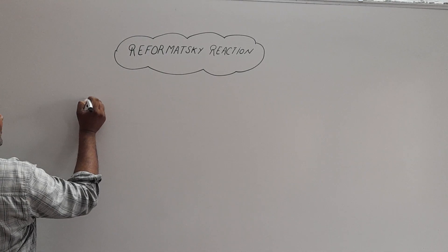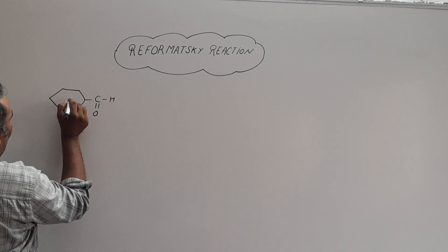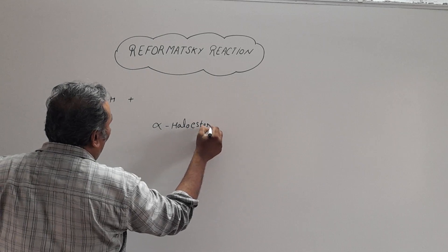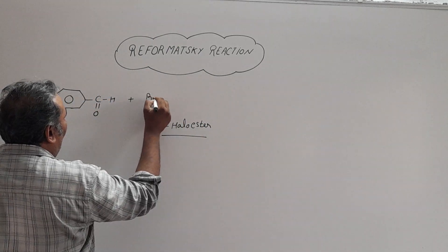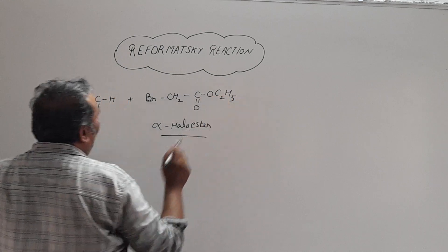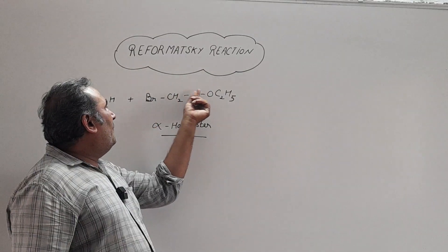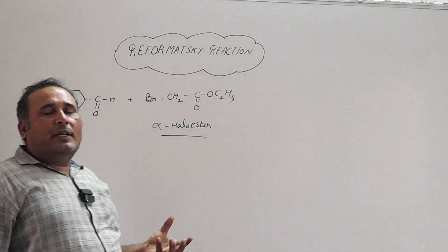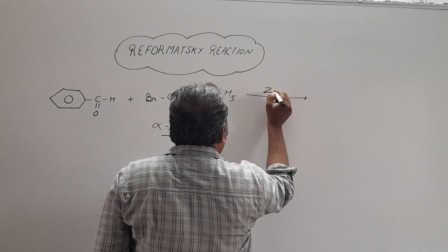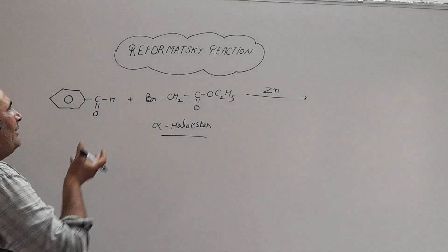In the Reformatsky reaction, we use an aldehyde or ketone — like benzaldehyde — with an alpha-haloester. Alpha-haloester means the halogen atom is attached at the alpha-carbon of the ester. When an alpha-haloester reacts with a carbonyl compound in the presence of zinc, we get alpha-beta unsaturated carboxylic acids. That reaction is known as the Reformatsky reaction.